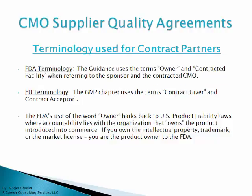There is different terminology used between the U.S. and the EU. The FDA guidance uses the terms 'owner' and 'contracted facility' when referring to the sponsor and the contracted CMO. On the other hand, the EU uses the terms 'contract giver' and 'contract acceptor.' You need to know those terms in order to understand what these regulations are saying.